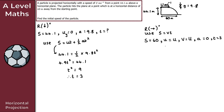Using s = vt: 60 = u × 3, so 3u = 60. Dividing both sides by 3 gives u = 20 meters per second. That gives the solution to question two and brings us to the end of this video on horizontal projection.